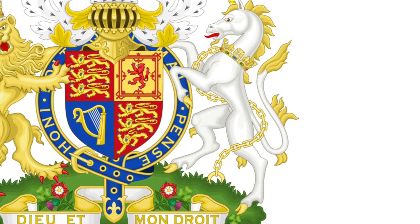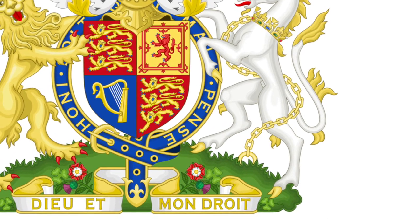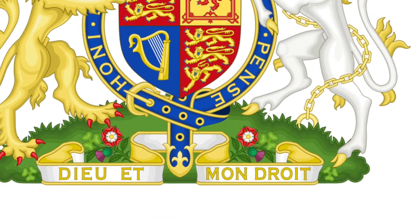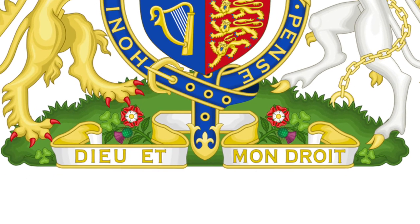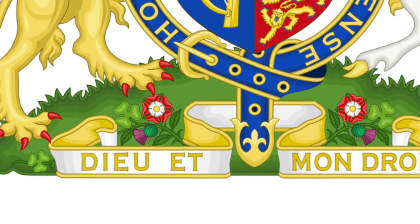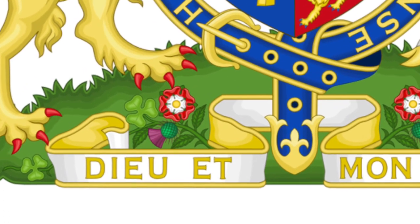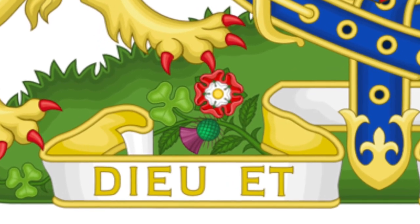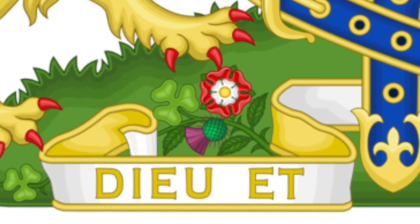As we move down to the very bottom of this achievement of arms, it looks like it's all sitting on a small grassy hill. This area is called the compartment. In this green compartment, we see three plants being represented: the Scottish thistle, the English Tudor rose and the Irish shamrock. If we look closely, we can see that all of these plants have been engrafted onto a single vine — a representation of the joined-up nature of the entity that is the United Kingdom of Great Britain and Northern Ireland.